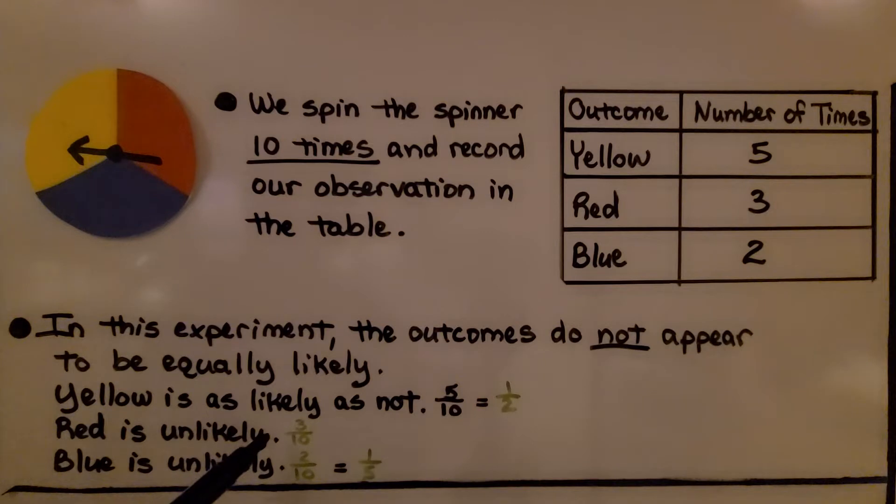Red is unlikely. It's less than half, 3 tenths. And blue is unlikely. We got 2 out of 10 times, 2 tenths, which is equal to 1 fifth when we simplify.